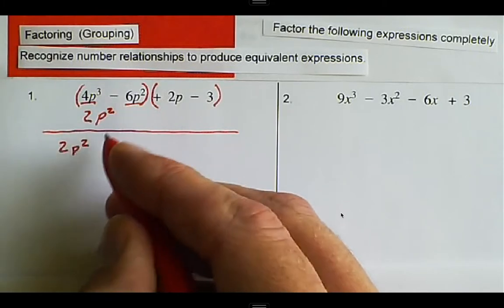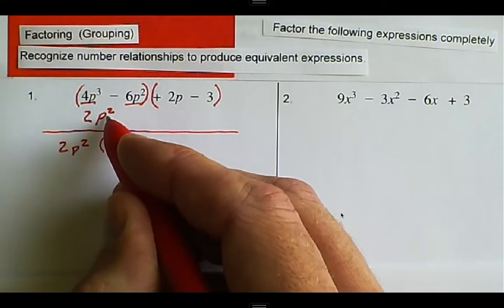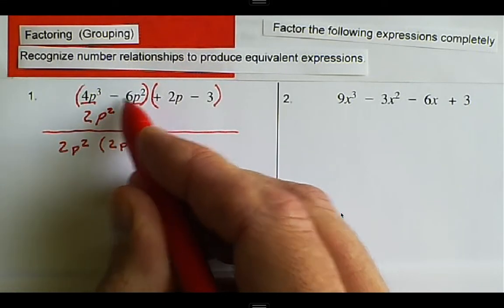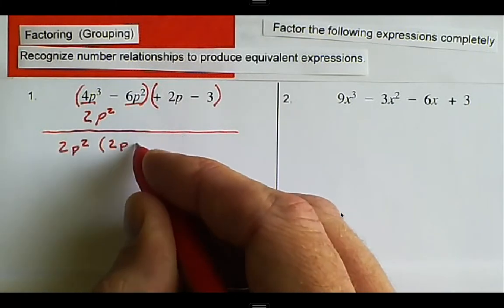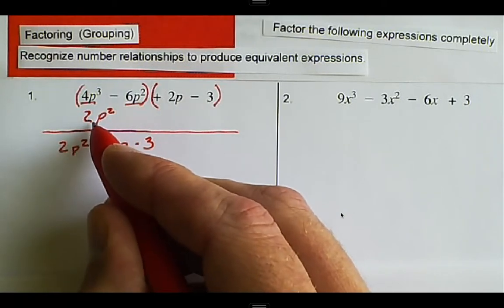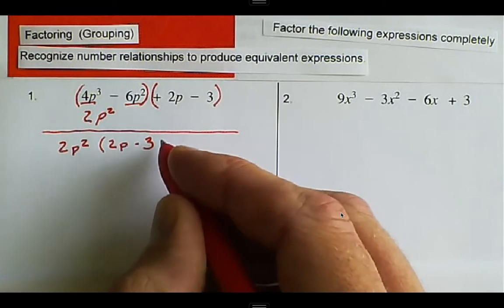And what's going to be left? 4 divided by 2, that is 2. P cubed divided by P squared, that is P. Negative 6 divided by 2 is negative 3. And P squared divided by P squared, that drops out.